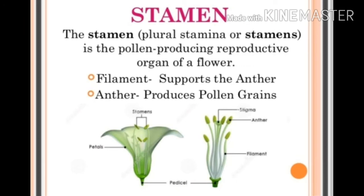The flower is the reproductive organ of a plant. The reproductive parts of the flower are stamen and pistil, and these are called the essential parts of the flower. The other parts — sepals and petals — are not involved in reproduction, so they are also called non-essential parts of the flower.